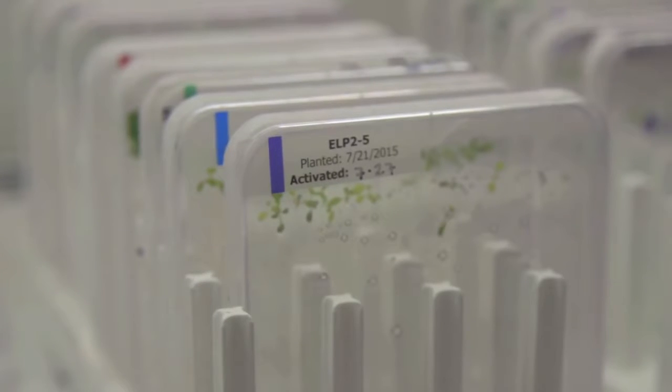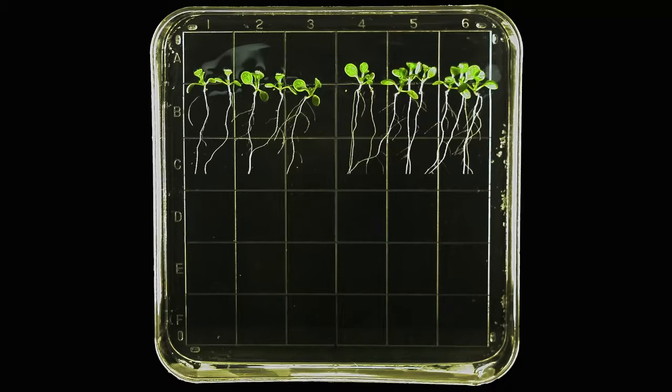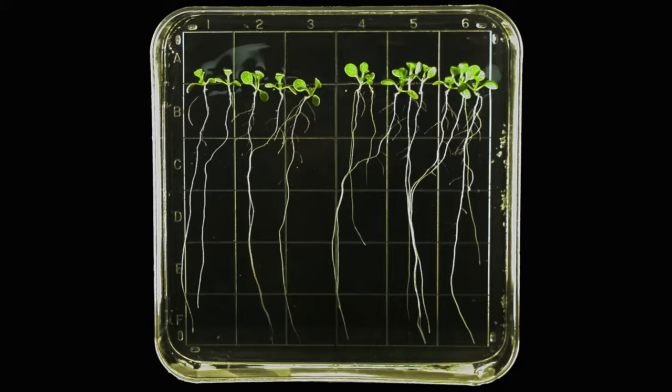You know, on Earth we usually grow them vertically, so we grow them on a vertical surface, and then the roots will grow pretty much straight down the surface of the plates. When you grow them in space, you think about it, there's no gravity to tell the roots which way to grow.